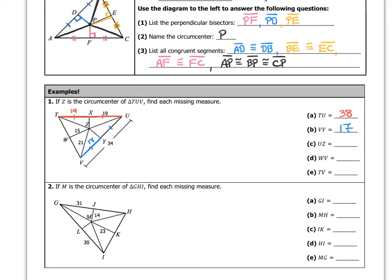For part C, segment UZ is the distance from the circumcenter to a vertex of the triangle. We know all of those distances are equal to each other, so UZ is congruent to TZ, which is also congruent to VZ. Since VZ is labeled as 21, UZ is also 21.